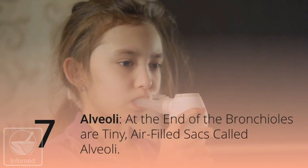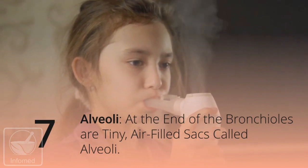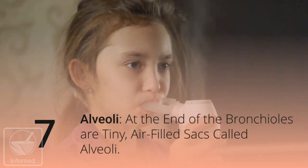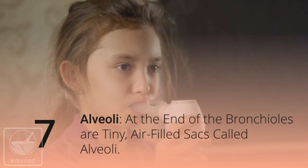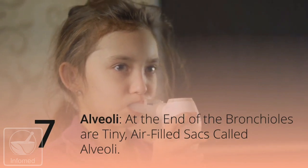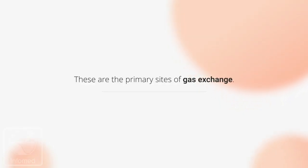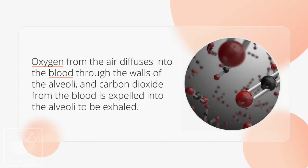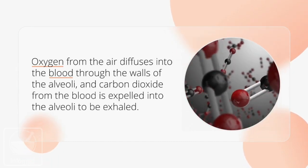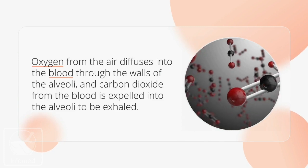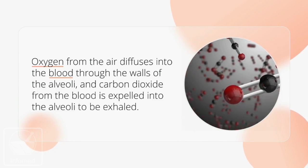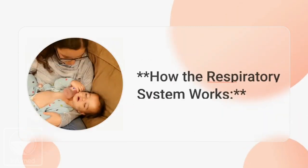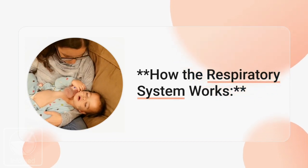Alveoli: at the end of the bronchioles are tiny air-filled sacs called the alveoli. These are the primary sites of gas exchange. Oxygen from the air diffuses into the blood through the walls of the alveoli, and carbon dioxide from the blood is expelled into the alveoli to be exhaled.